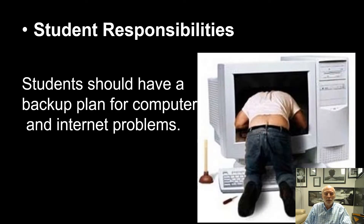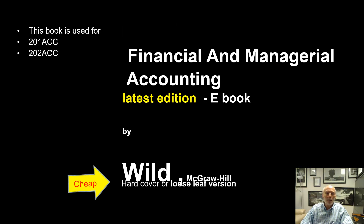It is your responsibility to have a backup plan if your computer or internet goes out. The book we're going to use is called Financial and Managerial Accounting — it's the latest edition and it's the e-book. You don't need to buy anything, but if you like something physical our bookstore will offer a loose-leaf version for less than $20, and this book will cover two classes.